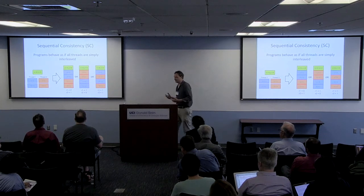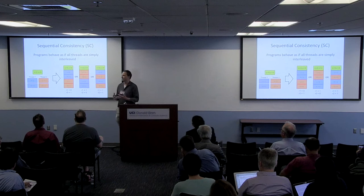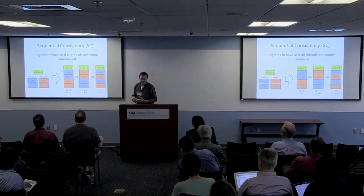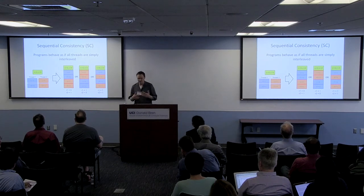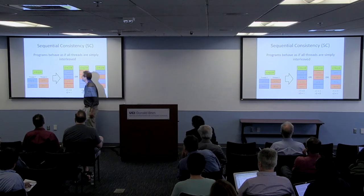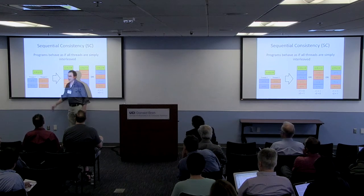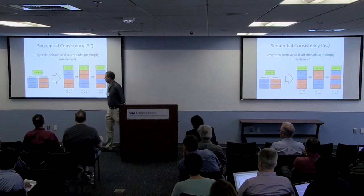I'll start by talking about the simplest and most intuitive model for how multi-threaded programs behave, which is the sequential consistency memory model. In this memory model, programs behave as if the threads are simply interleaved. For example, in this figure we have a program with two variables X and Y, both initially zero, and two threads.